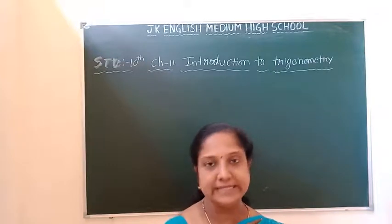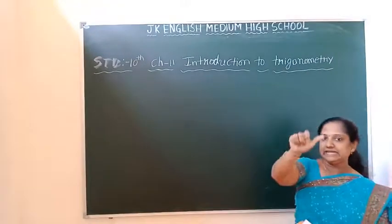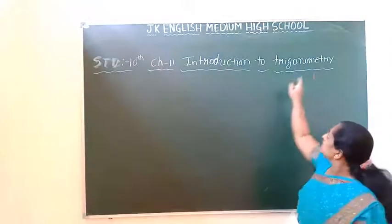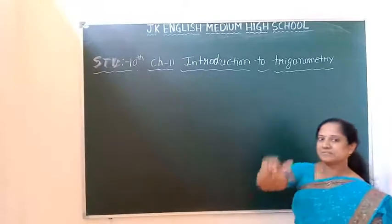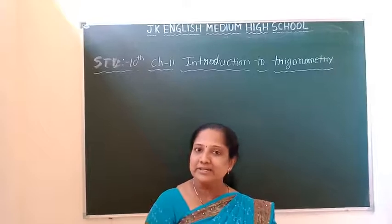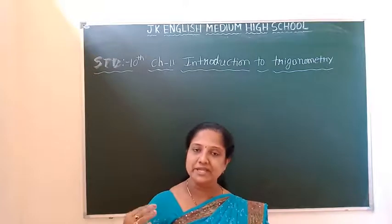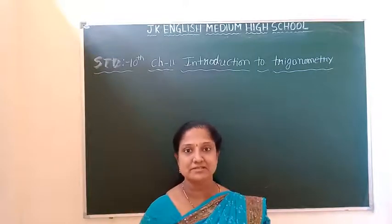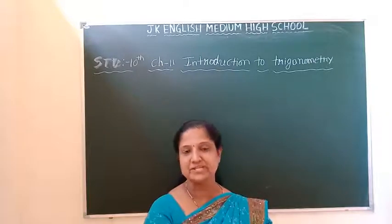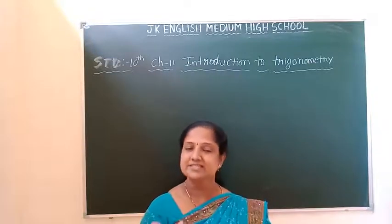Trigonometry — in the name itself: 'Tri' means three, 'gon' means sides, 'metry' means measurements. So trigonometry means three-sides measurements. Trigonometry is a branch of mathematics by which we cannot measure heights and distances by simply seeing, but using trigonometry we can find them out. Triangle — three sides measurements.